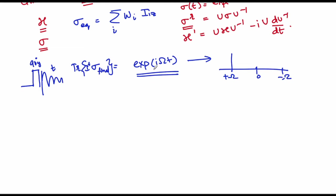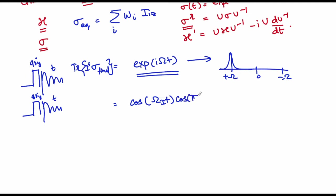Since this formalism does not incorporate relaxation, you do not get a line width, but we can always introduce it ad hoc so that this comes up as a resonance. Similarly, in the other example, in addition to chemical shift, if you have a simple 90y experiment, you ended up getting something of the form cos(Ωᵢt) × cos(πJt).